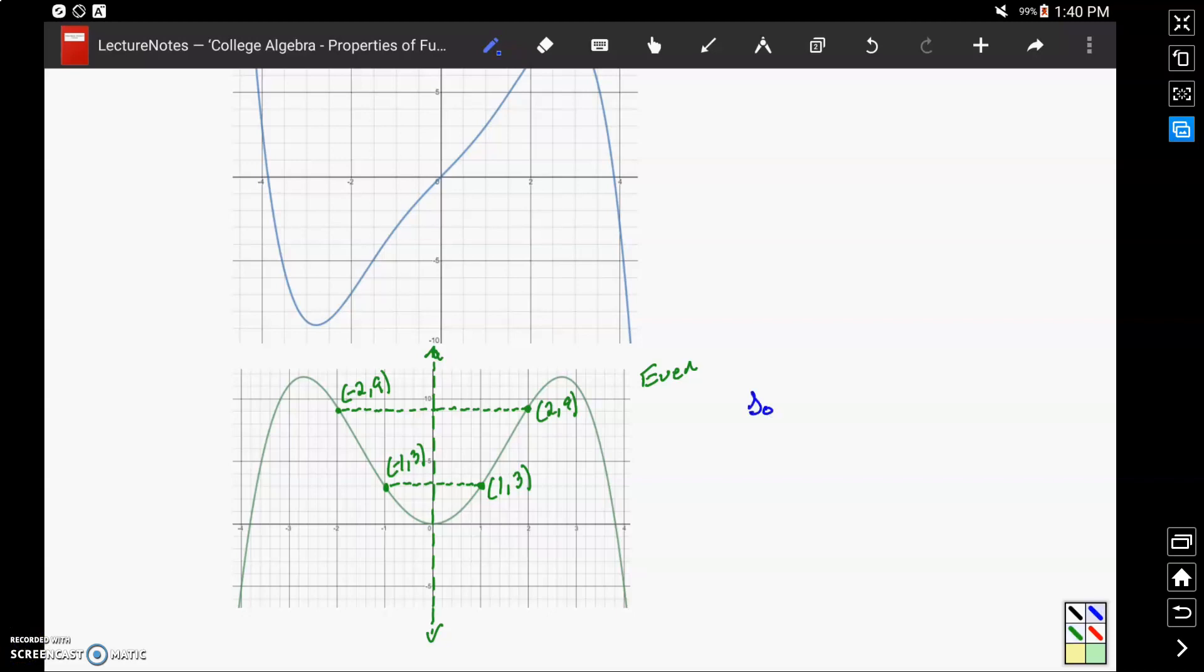Since we're also asked to identify the domain and range here, we can do that hopefully quickly. Our domain would be unrestricted, negative infinity to infinity. And our range in this case would be negative infinity, since our graph is continuing to decrease at both ends.